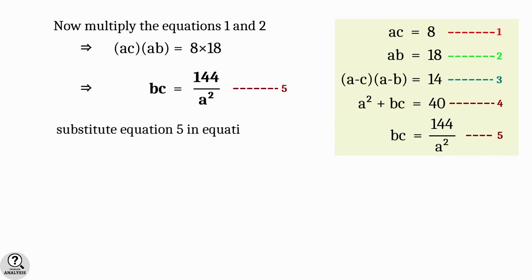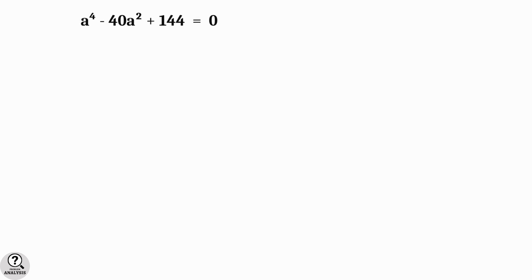Now, substitute in equation 4. That gives a² plus 144 by a² is equal to 40. Proper rearrangement of this equation will give a⁴ minus 40a² plus 144 is equal to 0. As you can see, this equation is in fact a quadratic equation in a². And I think you know how to solve.